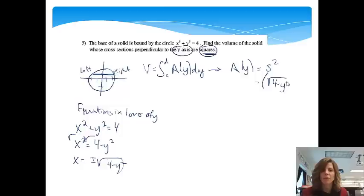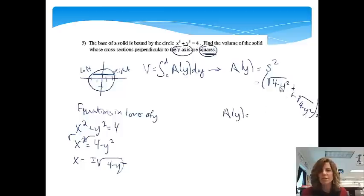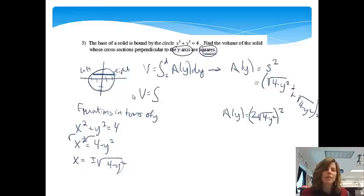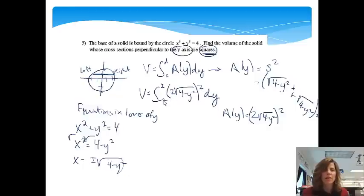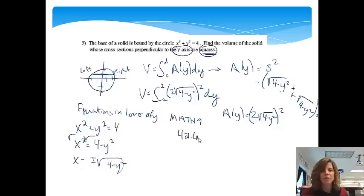That whole side expression squared: the two square roots combine to give 2 times square root of 4 minus y squared, and the whole quantity is still squared. So the volume equals the integral from negative 2 to 2 of (2 square root of 4 minus y squared) squared dy. Using the Math 9 feature of the calculator, we get 42.667. Hopefully now you can find the volume of an object whose cross sections are perpendicular to the y-axis.